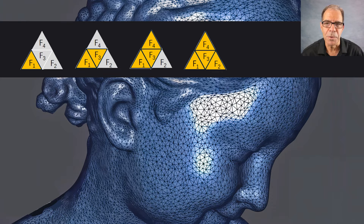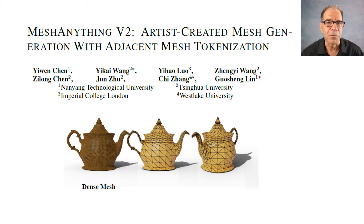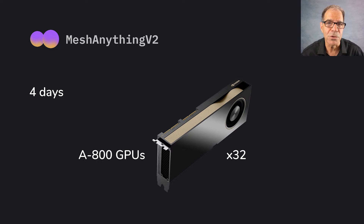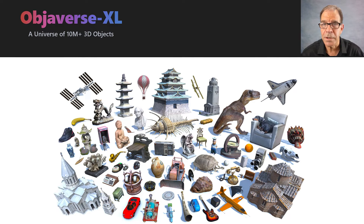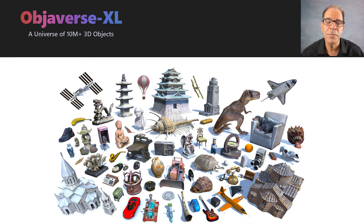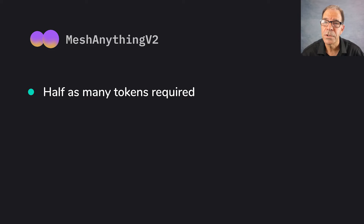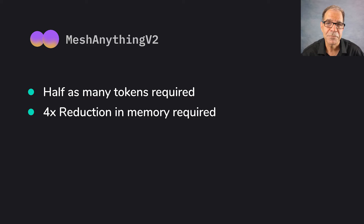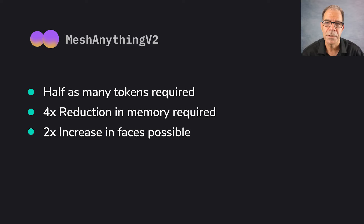Here's what we know from the paper. This version was trained for four days straight using 32 GPUs. After that, it was tested on the Objaverse test set, which is a widely used dataset consisting of millions of 3D objects. A key result was that this new approach required only about half as many tokens to represent the same information as before, which resulted in a four-fold reduction in memory requirement — allowing Mesh Anything to double the maximum number of faces it can handle on a single object to 1600, compared to 800 for current methods.